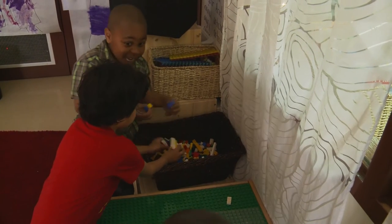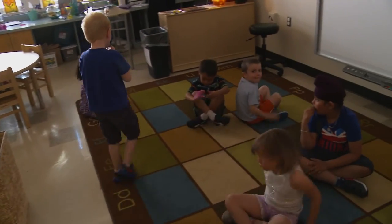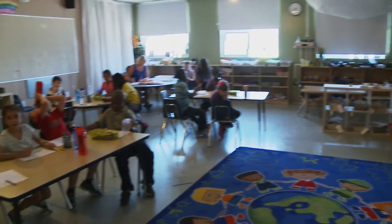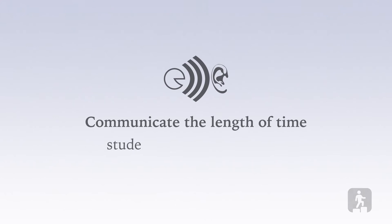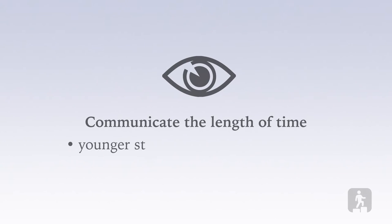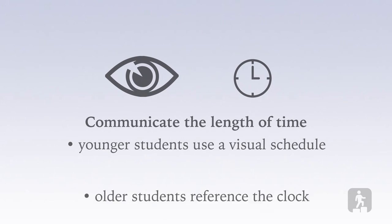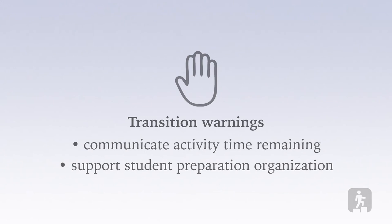The time of day where students frequently engage in challenging behavior is during transitions. There are a number of strategies that can support successful transitions and decrease off-task challenging behaviors. These include teaching and practicing behavior expectations for transitions, communicating the length of time students have for an activity — for younger students with a visual schedule, for older students referencing the classroom clock — and transition warnings that communicate the amount of time left in an activity to help students organize and prepare.